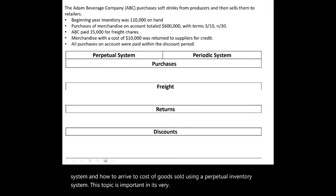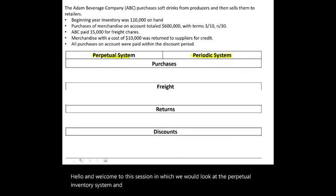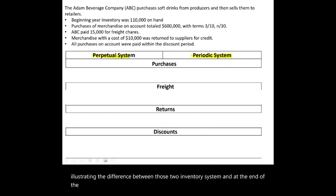Hello and welcome to this session in which we look at the perpetual inventory system and the periodic inventory system, with a series of transactions illustrating the difference between those two inventory systems. At the end of the recording, we will look at how to compute cost of goods sold under both systems.